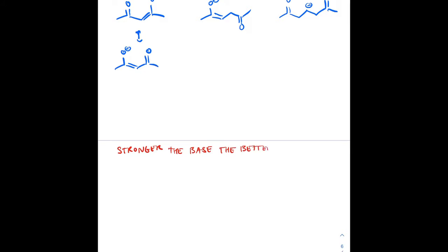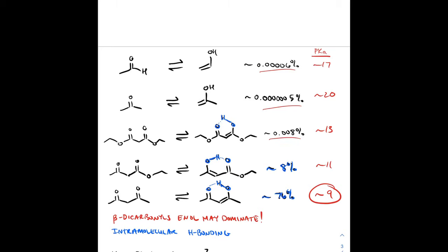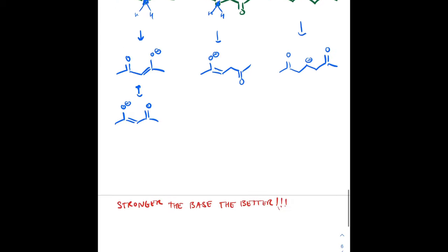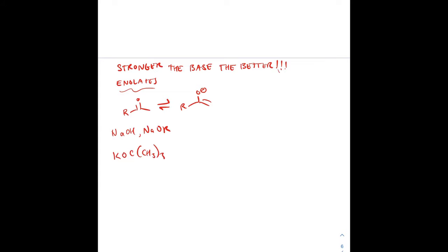Since enolates have a negative charge, they're more nucleophilic than enols, making them better for substituting an electrophile onto the alpha carbon. We want to form a higher percentage of enolates. Since this is technically an acid-base equilibrium, using a really strong base drives it far to the right.